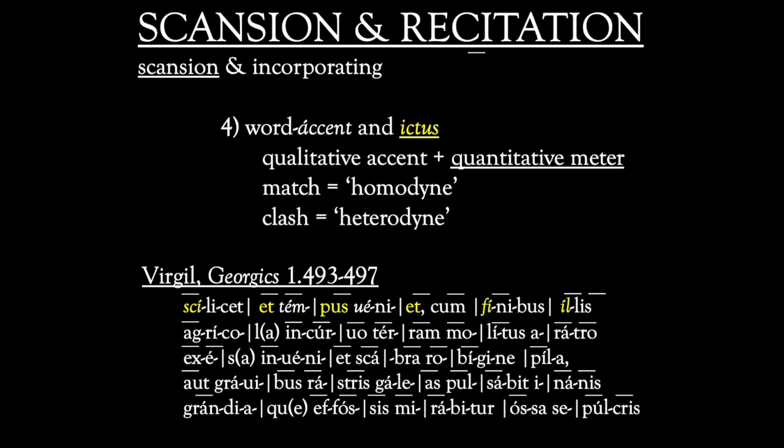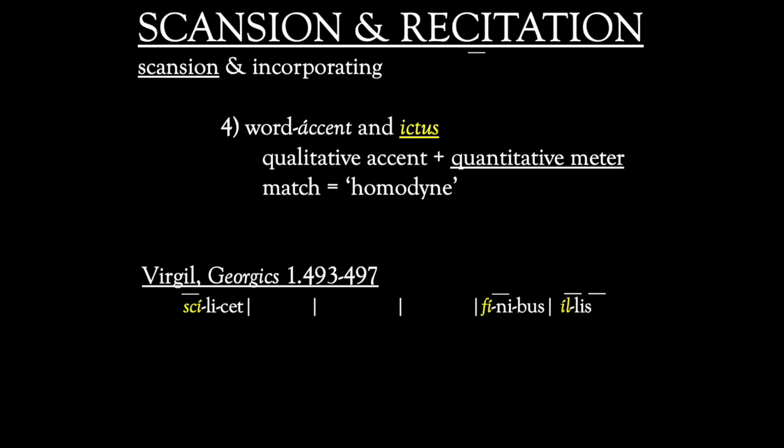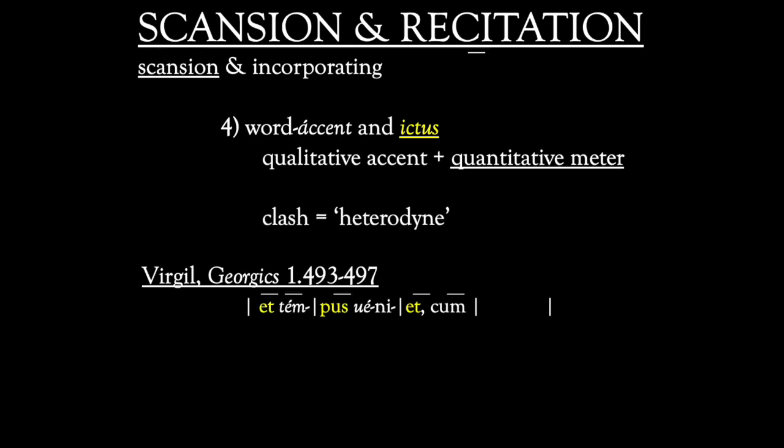Of interest is the interaction between accent and ictus. When they coincide or match, it's called homodyne. When they clash, it's called heterodyne. On this slide, only the homodyne feet are shown — notice the coincidence between stress and ictus. By contrast, on this slide only the heterodyne feet are shown — notice the clash between accent and ictus, including in the et-cum foot, where there are two stressed syllables but each is a monosyllable and there is only one ictus. Here are both types of feet together, homodyne and heterodyne.